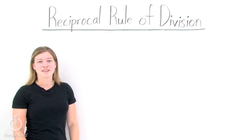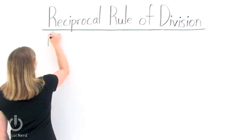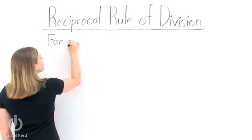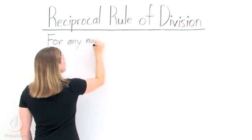What is the reciprocal rule of division? Well, the reciprocal rule of division is a rule that allows us to show the division of two numbers many different ways.